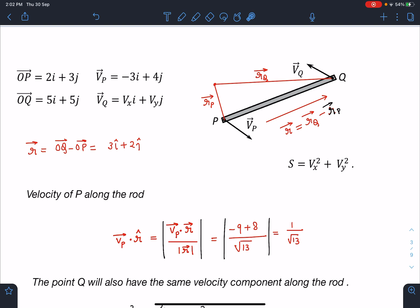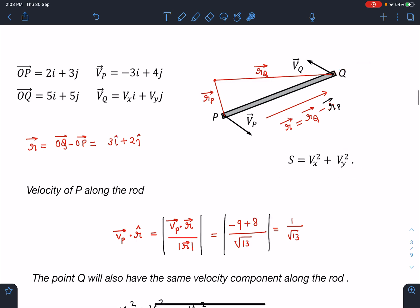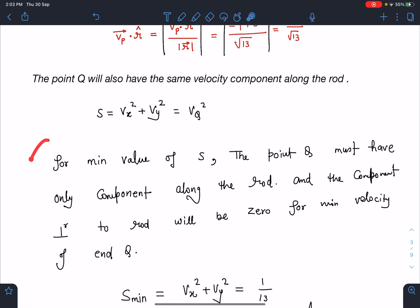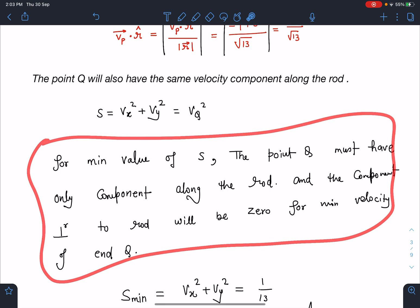Now the expression S is Vx² + Vy² and we have to minimize this. So basically it is minimum value of speed of point Q. Since it's a rigid rod it must carry this much amount of velocity and this perpendicular component we can say it can be zero in order to achieve a minima here.